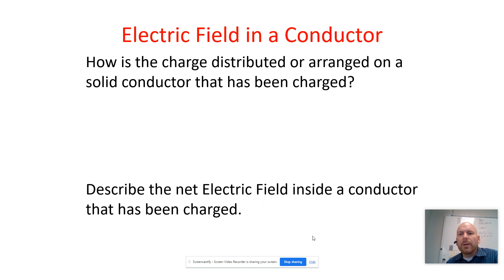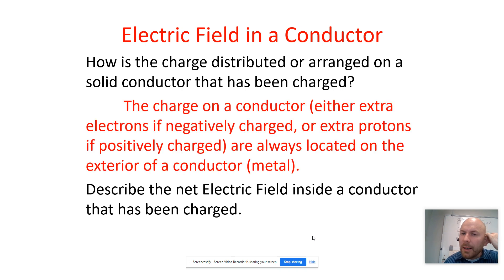How is the charge distributed on a solid conductor? We talked about this a little bit in class, but on a conductor, the charge always resides on the outside. So if it's negatively charged, extra electrons go on the outside. If it's positively charged, the extra protons are on the outside. It's always on the exterior of a conductor.